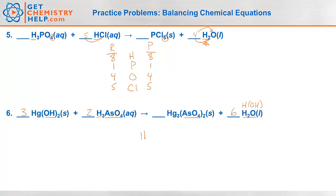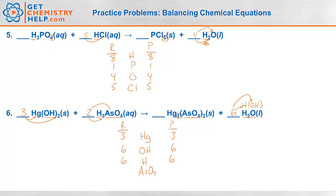Let's double check: mercury, hydroxide, hydrogen, and arsenate. Three mercuries on each side. Three times two is six hydroxides on the reactants; six on the products. Two times three is six hydrogens on the reactants; six on the products. Two arsenates on the reactants and two on the products.